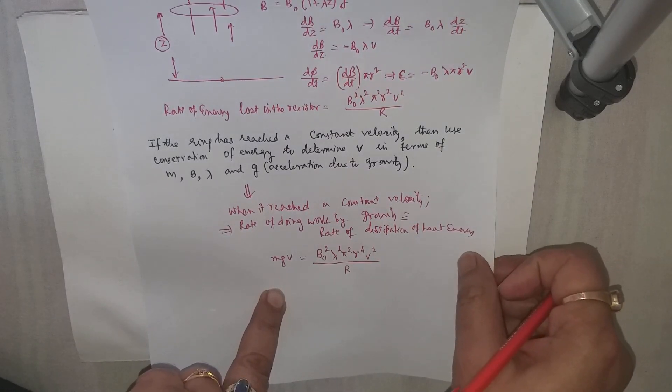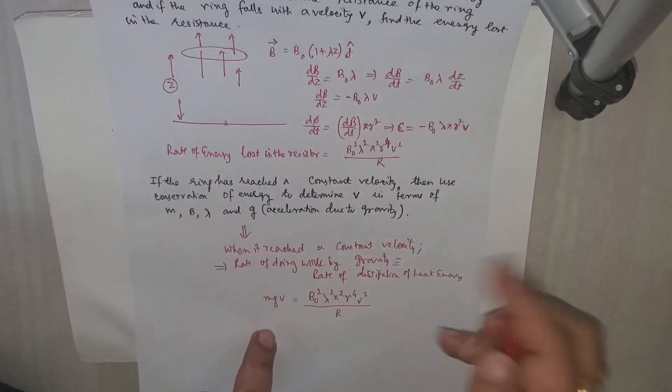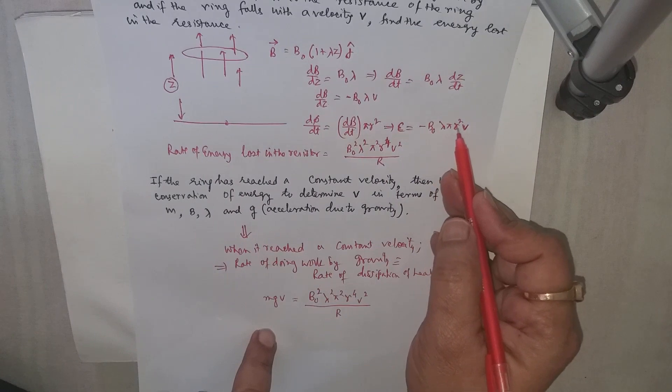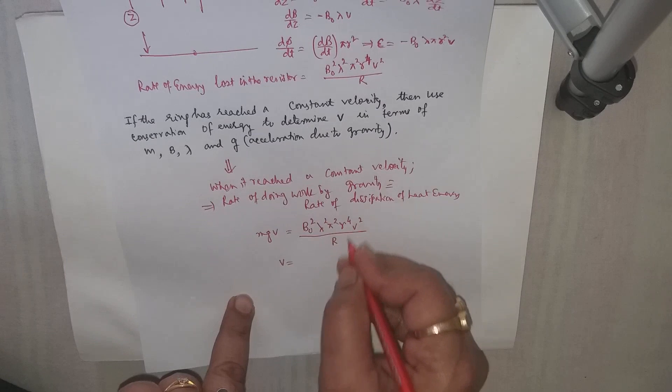So let us just check, it will be r⁴. After squaring πr², it will be r⁴, and from there one of the v gets cancelled.